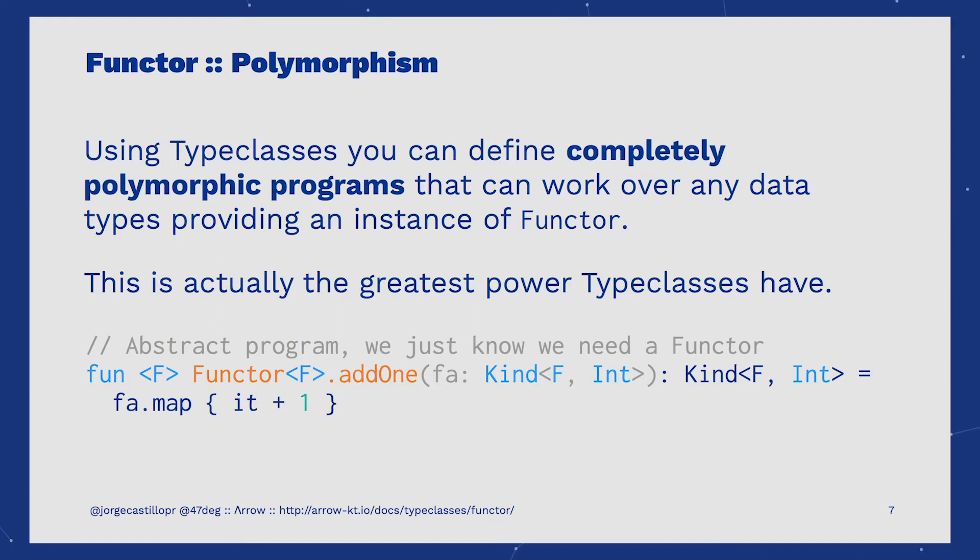Here you have an example. We can write a program in a completely abstract way, working over any instance of Functor for the type F, so the Functor behavior will be used to map over the inner value of it. Here, we are just adding one to that value, or incrementing it. And then we are returning the already mapped value wrapped again into the same computational context F.